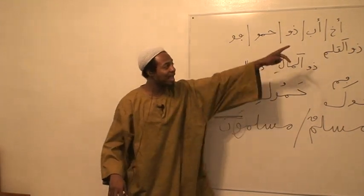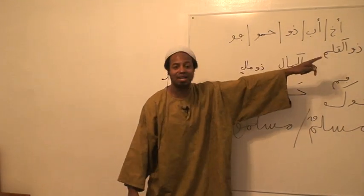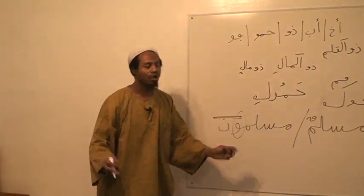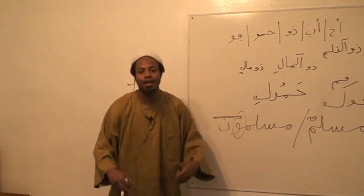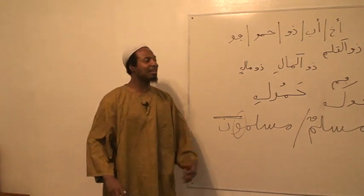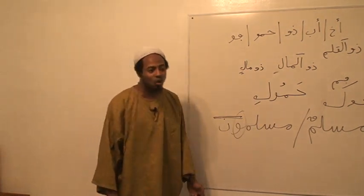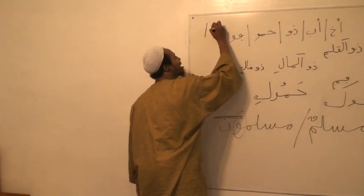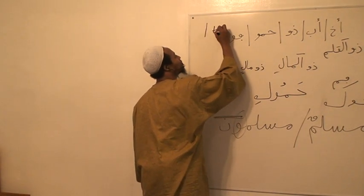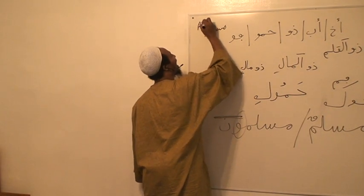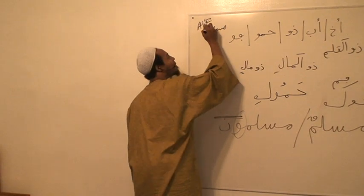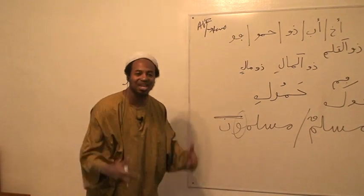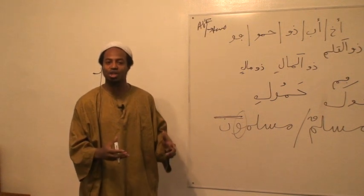I'm jumping ahead because I didn't do alif. The alif is real simple — it's called alif al-ithnan. The name says it all. The alif means two; that's what it means. Alif — that points to two. Whenever you see this alif in this construction...